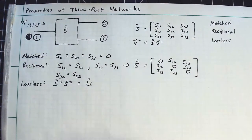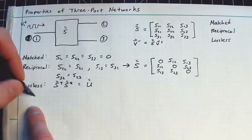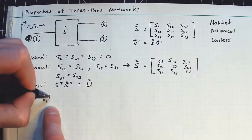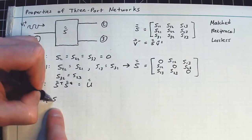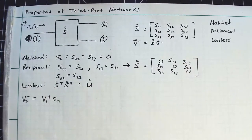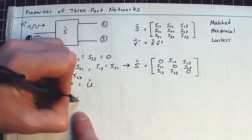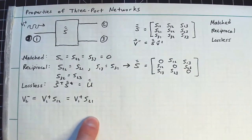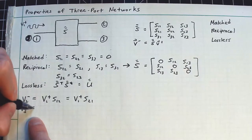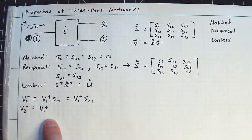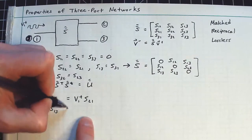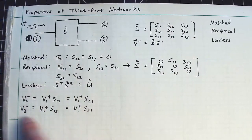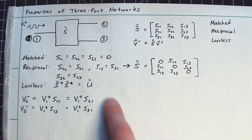So let's just do a quick little derivation of that right now. So we say something like V2- is equal to V1+ times S12, just by definition from this matrix, which, of course, by reciprocity, implies V1+ is equal to S21. These are the same thing here. And we also have the condition that V3- is equal to V1+ times S13, which will equal V1+ times S31. So this is just falling out of the definition of matched and reciprocal here.